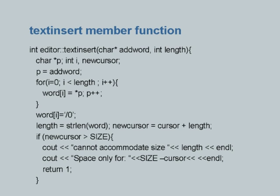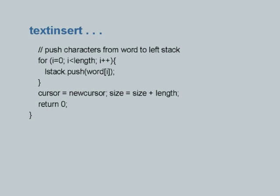The text insert member function will insert some text at the cursor position to the left of it. We expect a word to be added along with its length. We temporarily push it into an internal array, and find out the length of that word — so the int length which is given is irrelevant because we use our own calculation. If the total size after addition of the word becomes larger than the capacity, we say sorry; otherwise we push every character in that word onto the left stack, which is the text insertion.